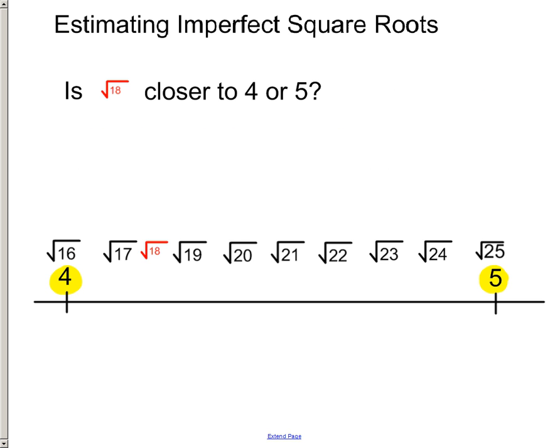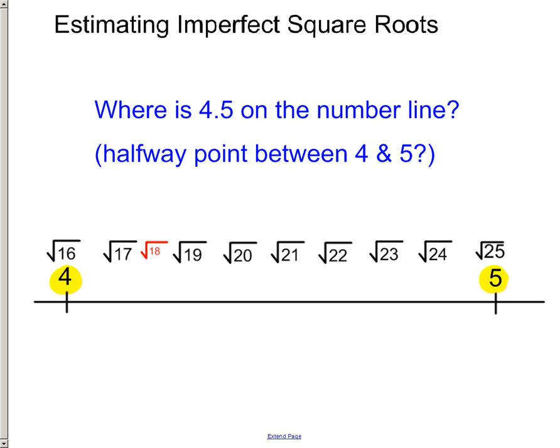Now, is the square root of 18 closer to 4, or is it closer to 5? It's got to be closer to 4, definitely 4. Now, where is 4.5 on this number line? It's halfway in between this 4 and this 5, so does that look good about right there? So, I would say that the square root of 21, if my estimate of the spacing is out, it's probably close to 4.5. Maybe it's 4.4, maybe it's 4.6, but this is right in the middle for the most part.